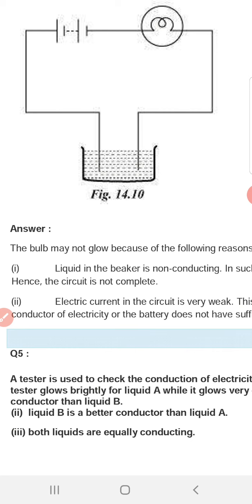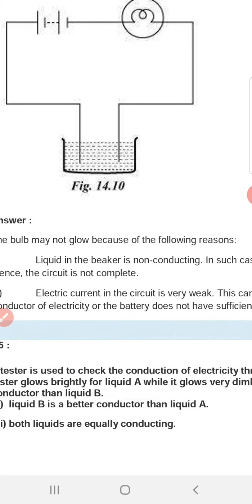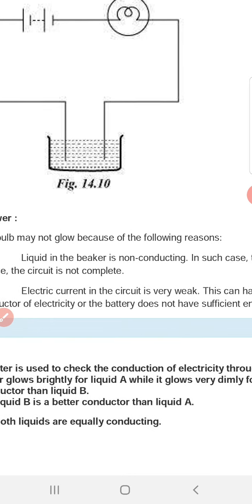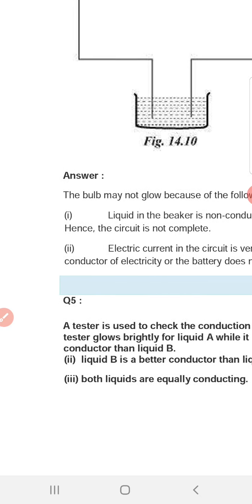The bulb glows based on the conducting properties of the liquid. If the liquid is non-conducting, the circuit will not be complete and the bulb will not glow.